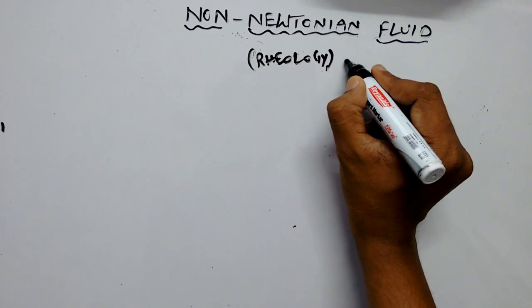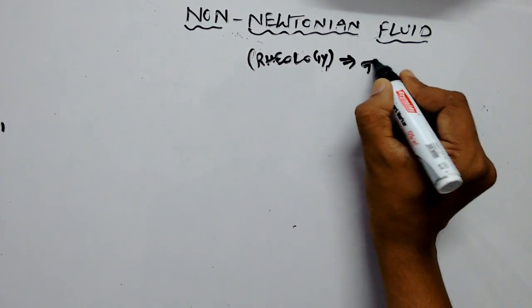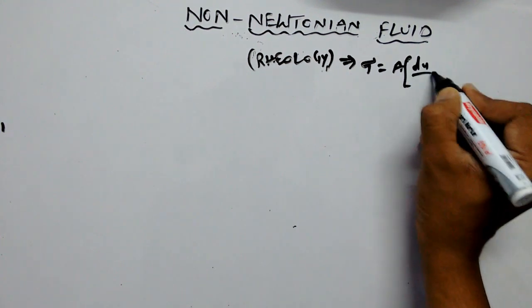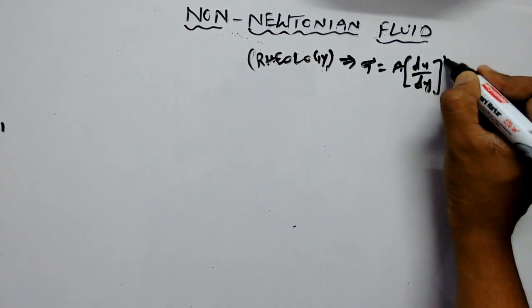The generalized equation of this non-Newtonian fluid is tau equals a into du by dy whole power n plus b.